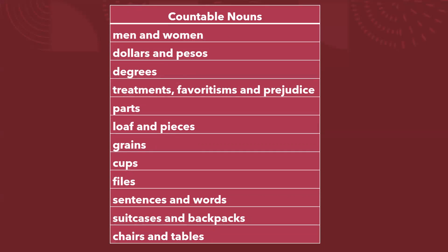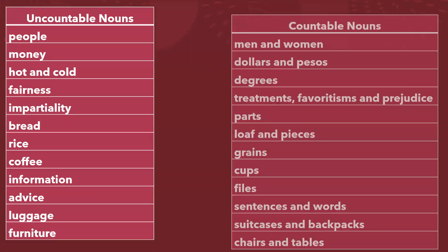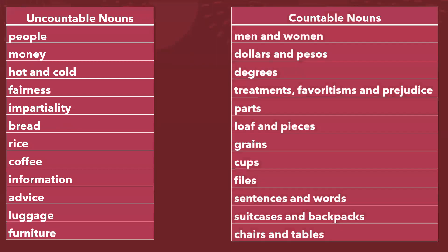Why all these words? Well, we can talk about population if we talk about people, and population is an uncountable noun, while men and women can be counted. The same happens with money. Money is a concept — that's why it's an uncountable noun — but we can count dollars and pesos. Hot and cold, we can measure them by degrees.